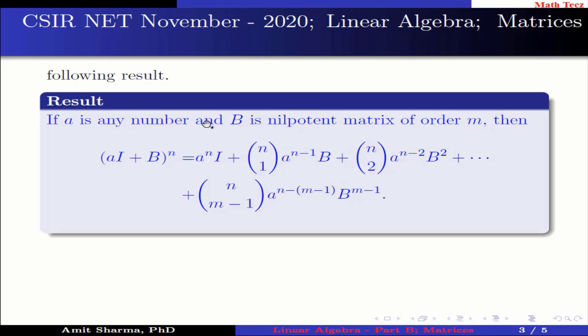If a is any number and B is nilpotent matrix of order m, then (aI + B) raised to the power n equals a raised to the power n times I plus nC1 times a raised to the power n-1 times B plus nC2 times a raised to the power n-2 times B squared and so on, plus nC(m-1) times a to the power n-m+1 times B raised to the power m-1.